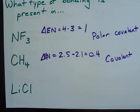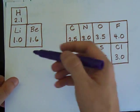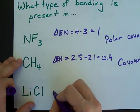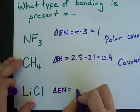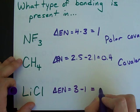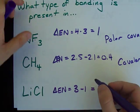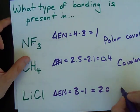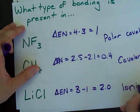And finally, lithium chloride. Between lithium and chlorine, that's 3 and 1. Now those are quite a ways away from each other. The difference in electronegativity is 3 minus 1, which is 2. That's a huge difference. Anything above 1.7 is called ionic, so this is an ionic bond.